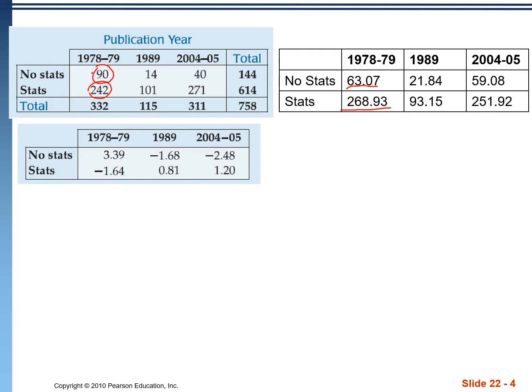However, we also need to keep in mind that these sample sizes are different — this one is 332, this one is 115. A difference of 20 would be more significant in the smaller group than in the larger group, because 20 out of 115 is a much larger percentage than 20 out of 332. So the residuals equalize all of that — they tell us how large these differences are with respect to how big the sample is.